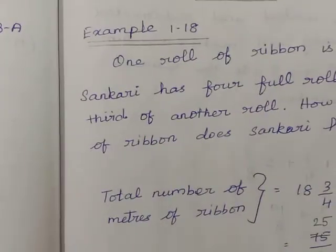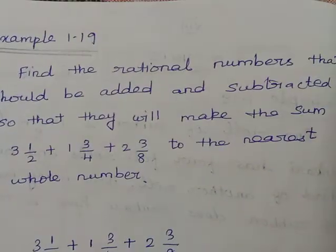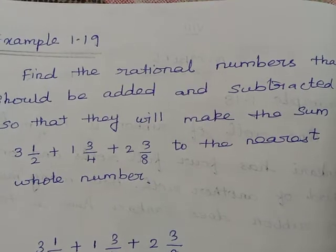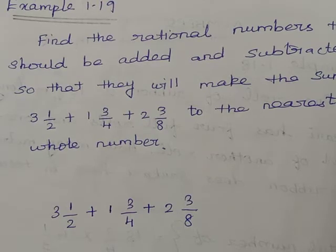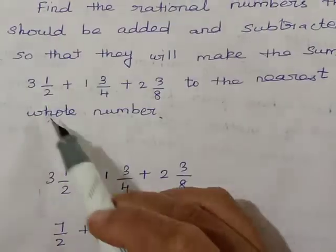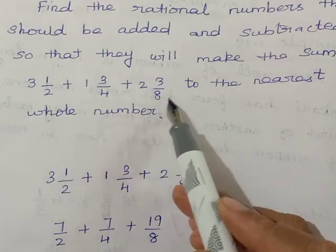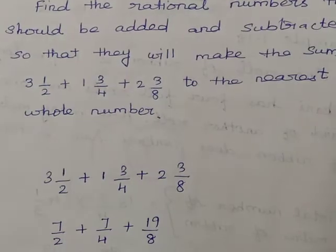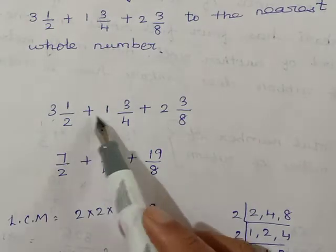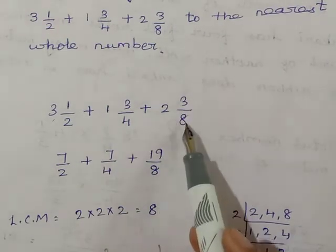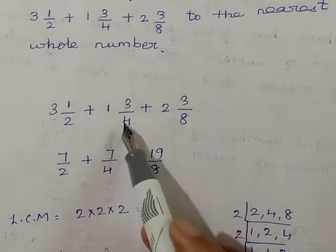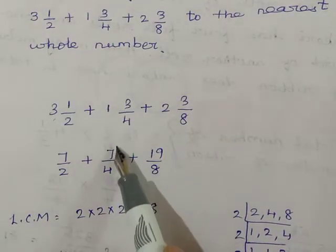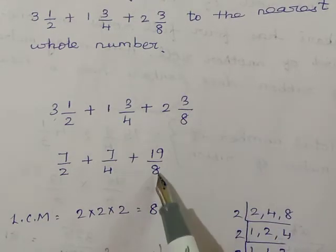Next, Example 1.19. Find the rational numbers that should be added and subtracted so that they will make the sum to the nearest whole number. The expression is 3 and 1 by 2 plus 1 and 3 by 4 plus 2 and 3 by 8. First we solve this sum by converting all mixed fractions to standard form: 3 twos are 6 plus 1 gives 7 by 2; 1 four is 4 plus 3 gives 7 by 4; 8 twos are 16 plus 3 gives 19 by 8.